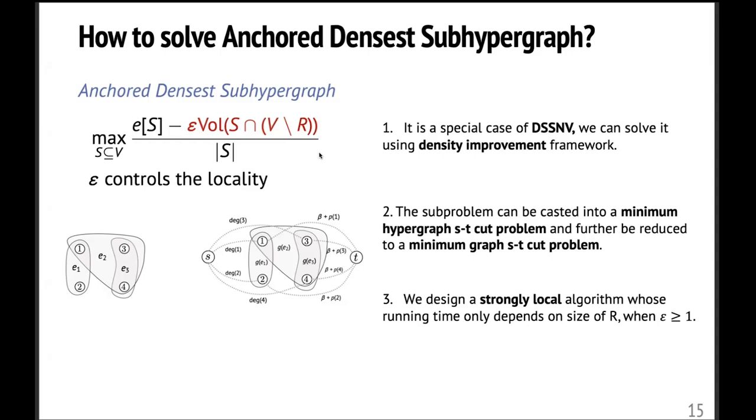Third, when the locality degree is strong enough. So here, when epsilon is at least one, we can actually design a strongly local algorithm whose running time only depends on the reference, the size of the reference set, instead of the whole graph. So it can make the algorithm really efficient.